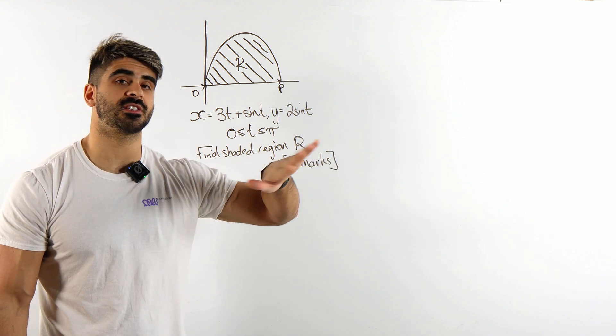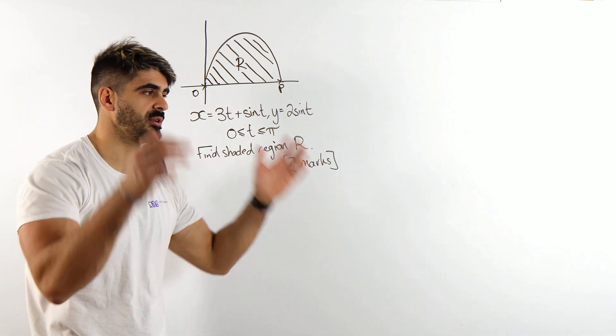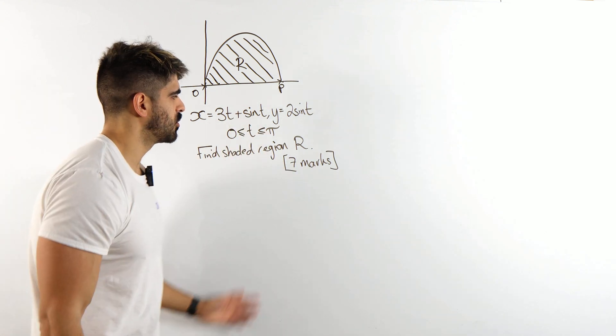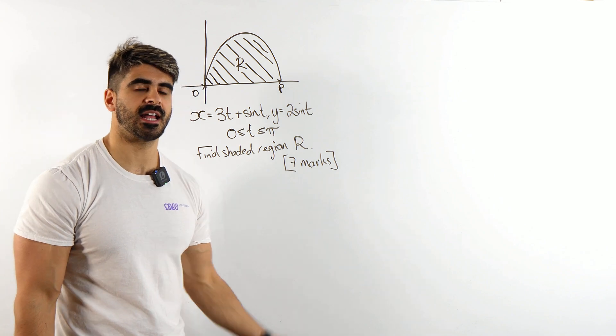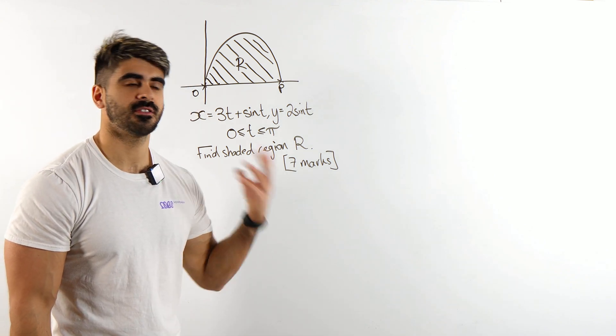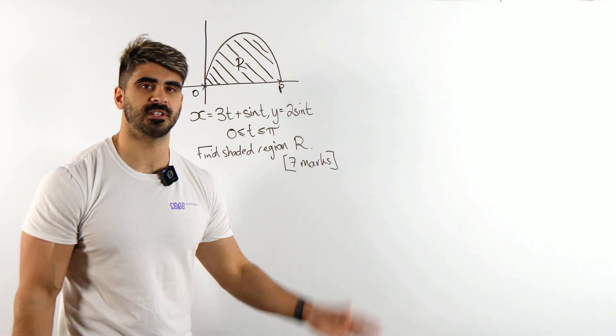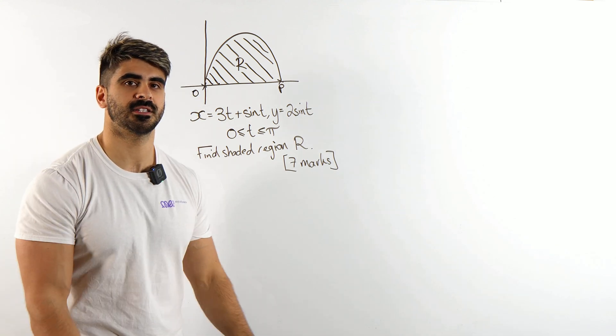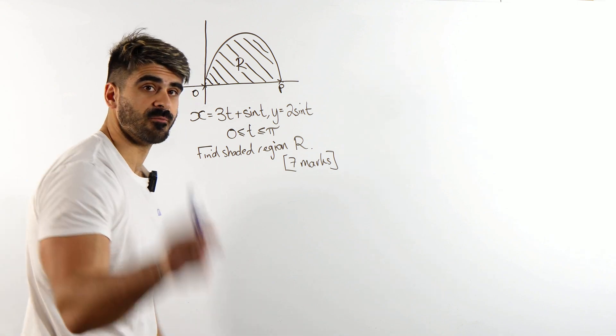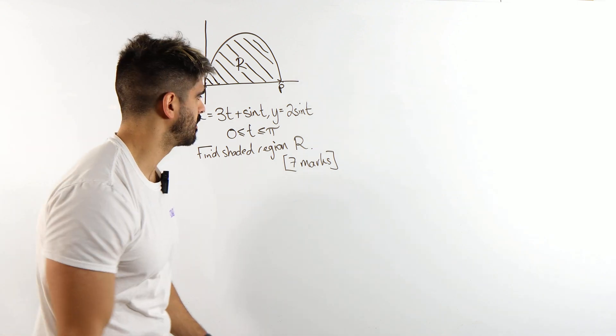Now one thing that students always say is why don't we just use the parametric formula integral y dx/dt dt. Now guys, the reason I don't promote these things is you have enough to remember. We stick to basic principles and then we figure it out. There's already way too many things, it's not physics, we're not here trying to remember 10 trillion formulas. If you use the formula booklet, you've not revised enough.